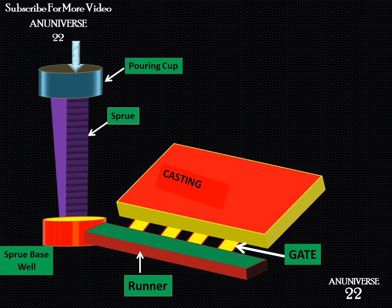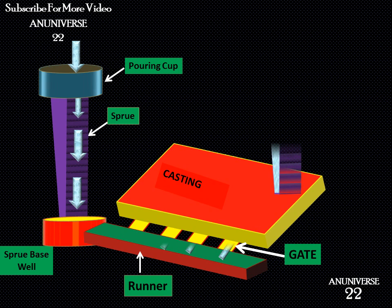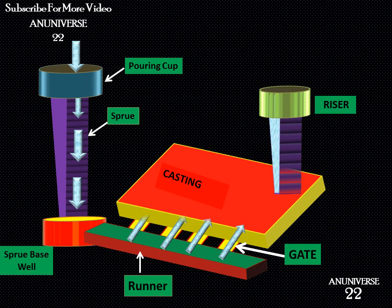Here we can see the molten metal starting to enter through the pouring cup, then through the sprue, from the runner, and through the gates it goes towards the mold cavity.